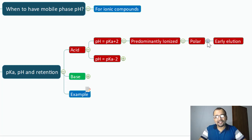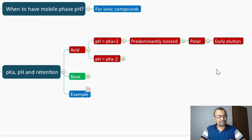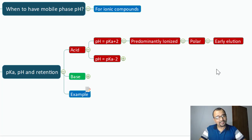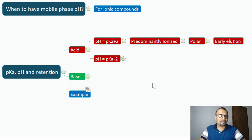Because the polar compound will not retain on the non-polar stationary phase, it will elute very early in the chromatography graph. This is how the retention of an acid with the mobile phase pH equal to pKa plus 2 is going to occur.